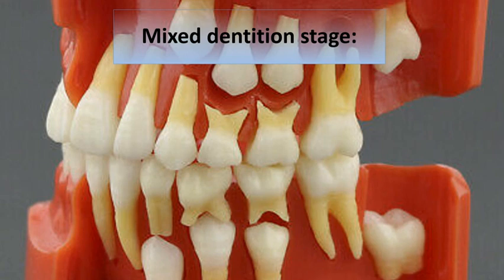There is a close relationship between the moment of eruption of a tooth and its stage of root development. This relationship states that when three quarters of the root is formed, the tooth normally erupts in the mouth. In the case of the lower first permanent molar and the central incisor, the tooth will erupt when half the root is formed.